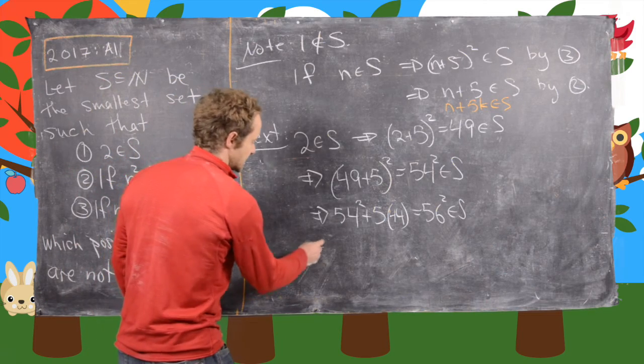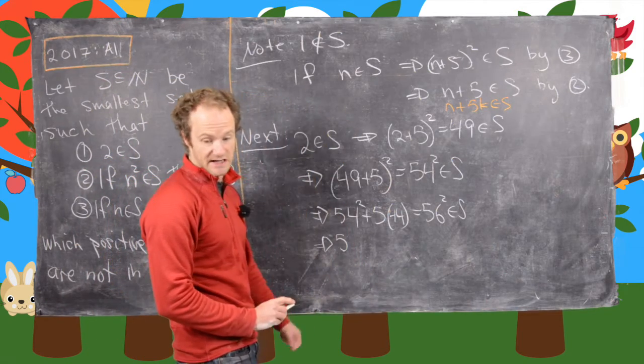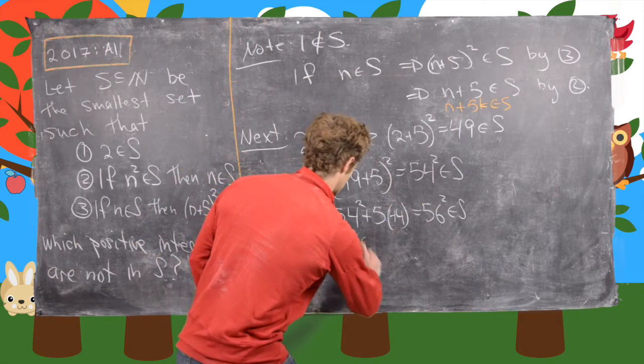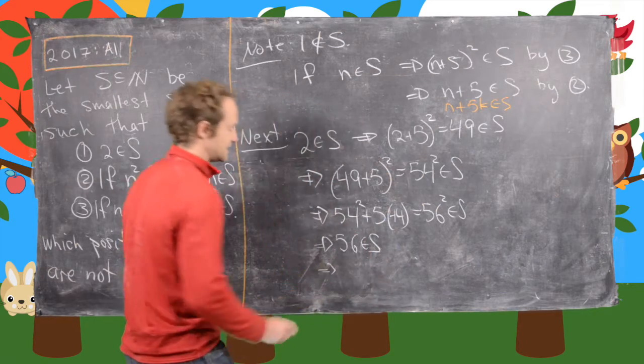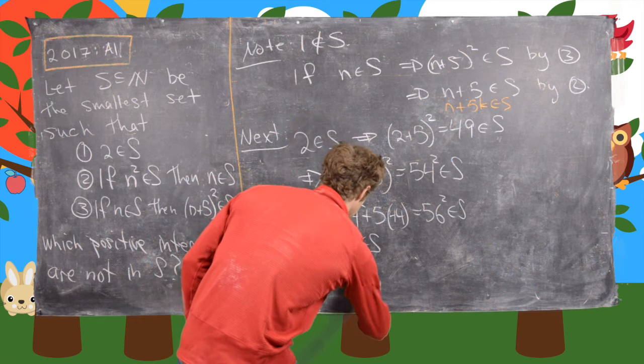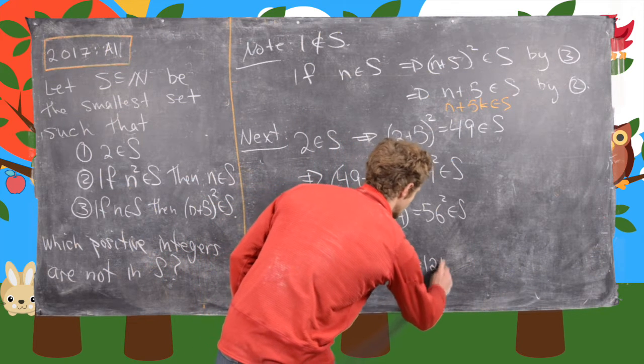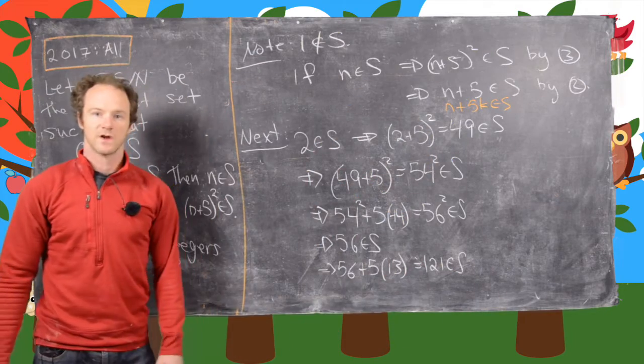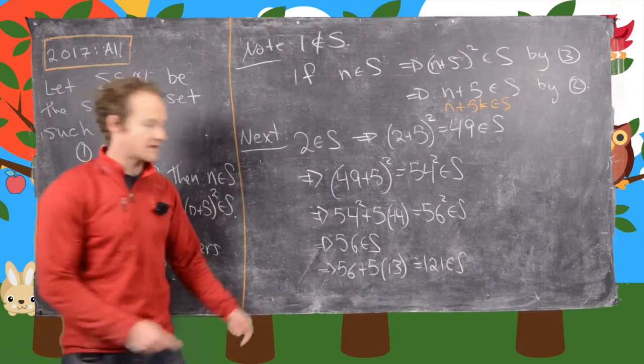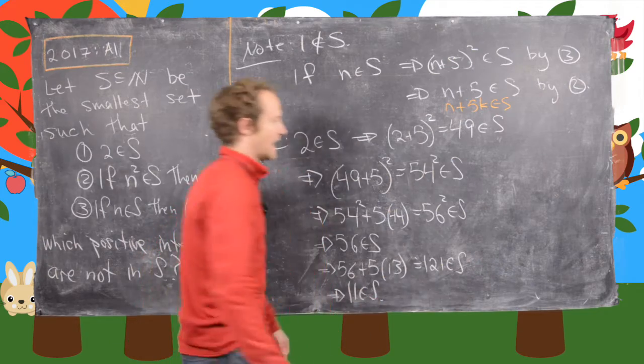Now the next thing that we'll do is this. So this tells us that 56 is in S because 56 squared is. And from there, we can do 56 plus 5 times 13, which is 121 is in S. But then that's 11 squared is in S, which tells us that 11 is in fact in S.